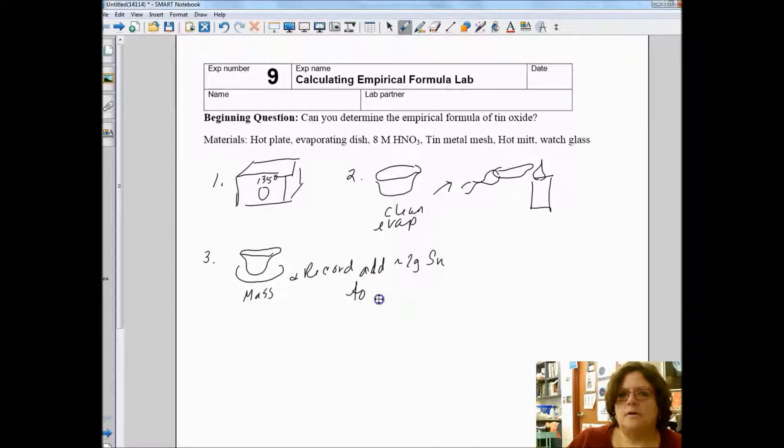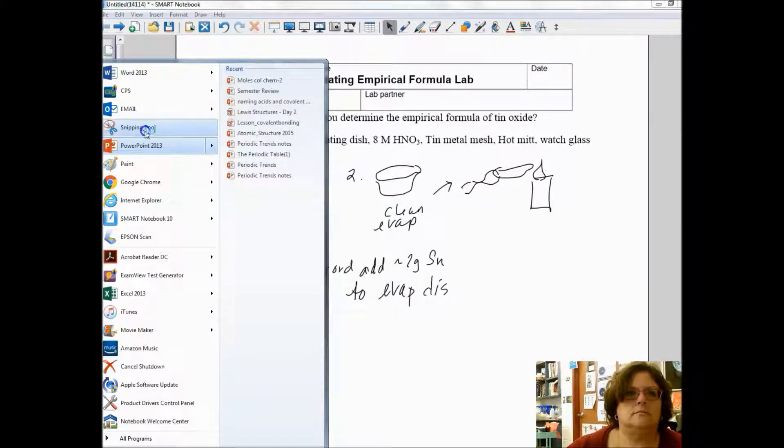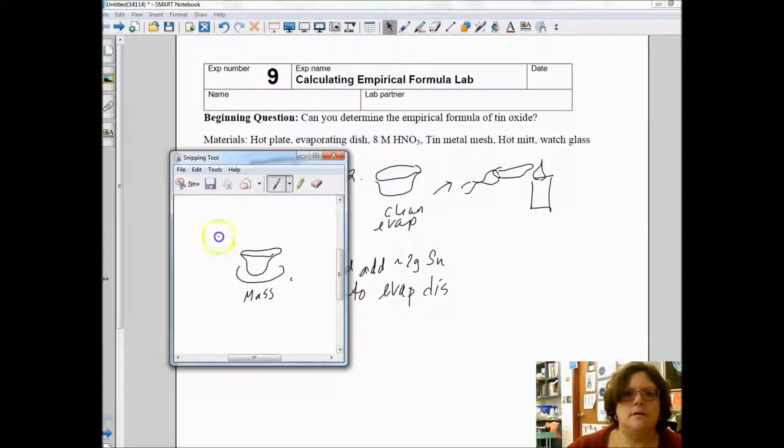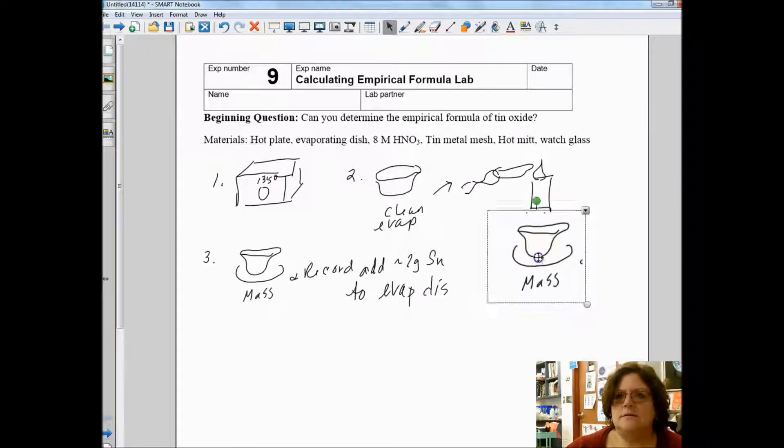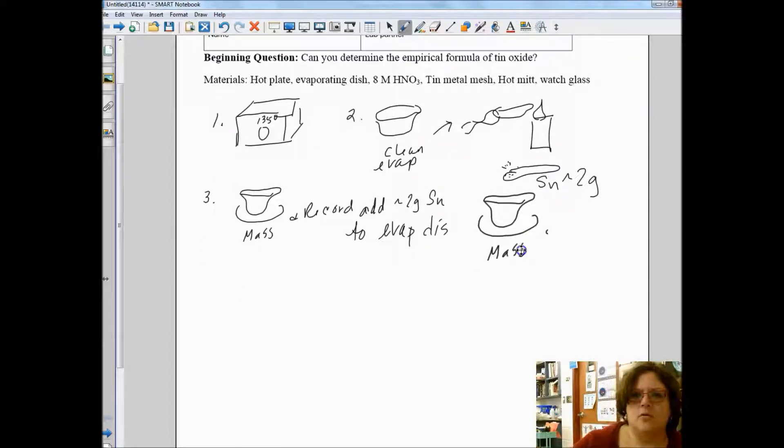To the evaporating dish, add two grams and record, and then you have to mass it again and record.